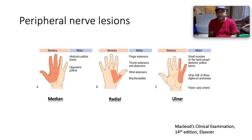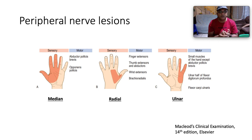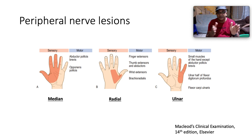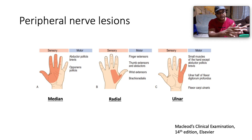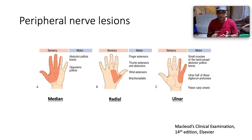For median nerve lesions: sensory loss involves the lateral three-and-a-half digits and motor loss affects the LOAF muscles — the two lateral lumbricals, opponens pollicis, abductor pollicis brevis, and flexor pollicis brevis. For radial nerve lesions: sensory loss is in the anatomical snuffbox area, and motor involvement includes finger extensors, thumb extensors and abductors, wrist extensors, and brachioradialis. For ulnar nerve lesions: sensory loss is over the medial one-and-a-half digits, and motor dysfunction affects all small intrinsic hand muscles except abductor pollicis brevis, plus the ulnar half of flexor digitorum profundus and flexor carpi ulnaris.